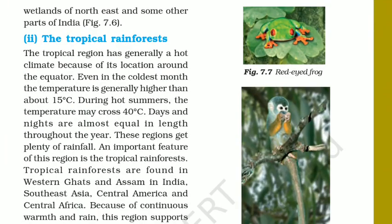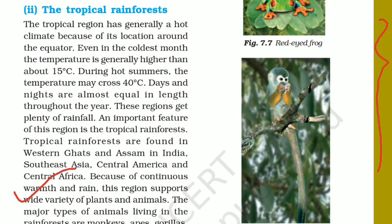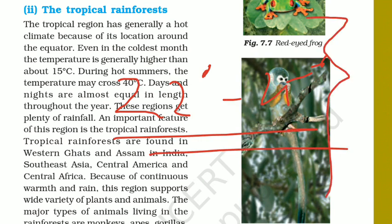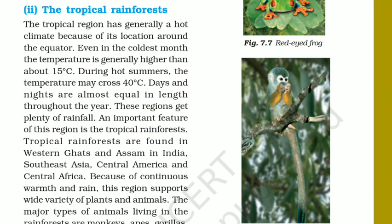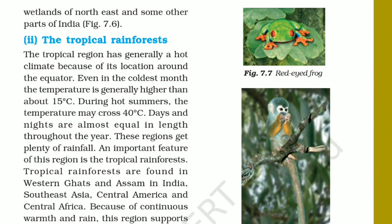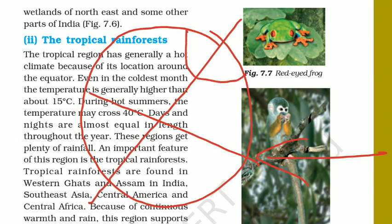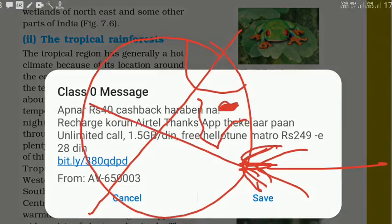Now let's move to the tropical rainforest. In the tropical rainforest, the average temperature throughout the whole year is almost 22 to 25 degrees Celsius. Even during the colder months, the temperature does not go below 15 degrees Celsius. As you all are living in India, you can easily understand that the places near the equator experience warmer conditions, and the sun rays fall more directly there.